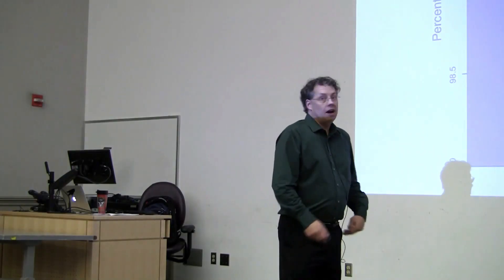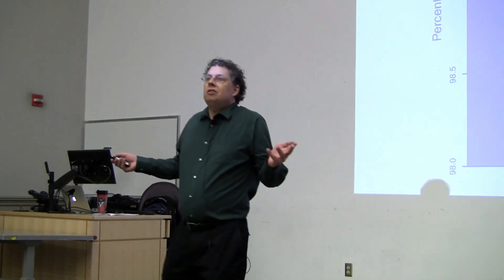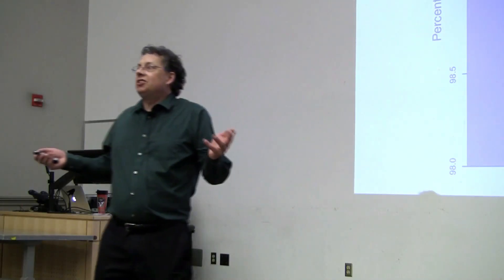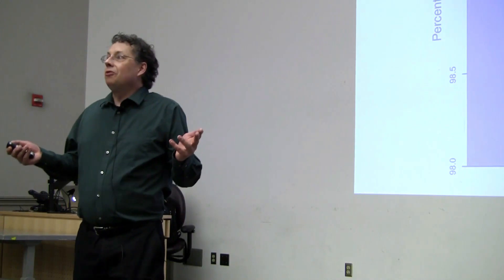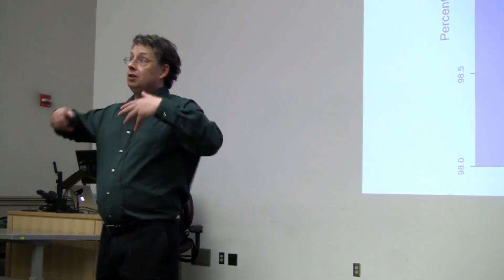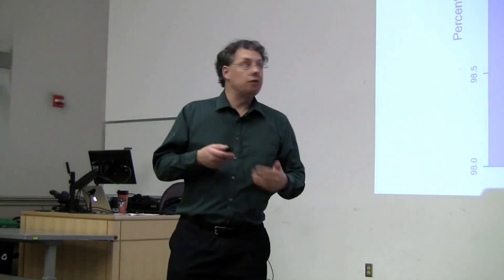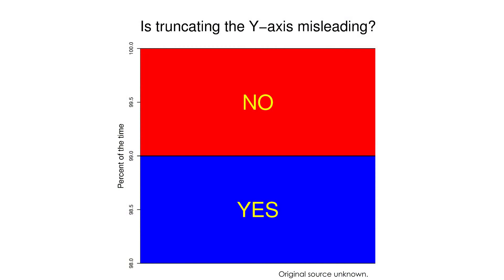So let's dive right in. One of the most obvious tricks that people do when trying to tell you a misleading story with data graphics is to truncate the dependent variable axis, the y-axis.